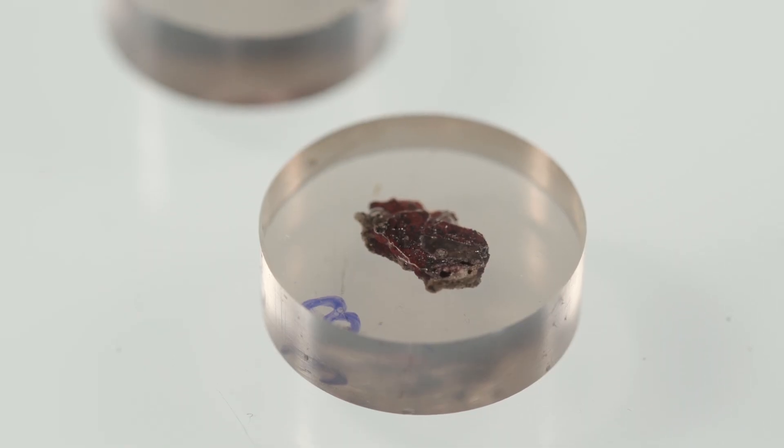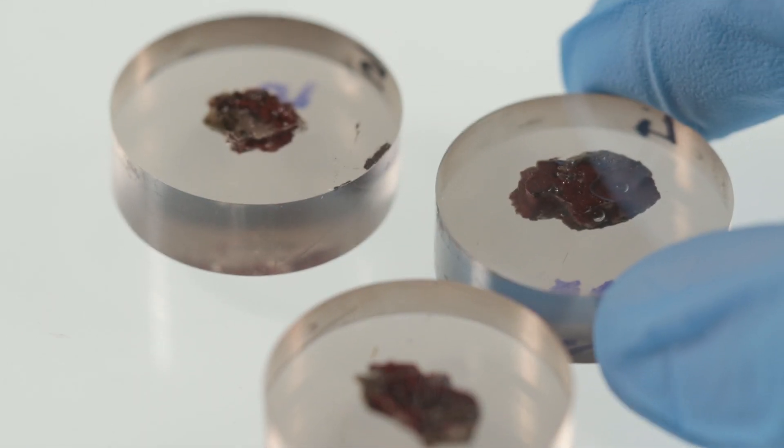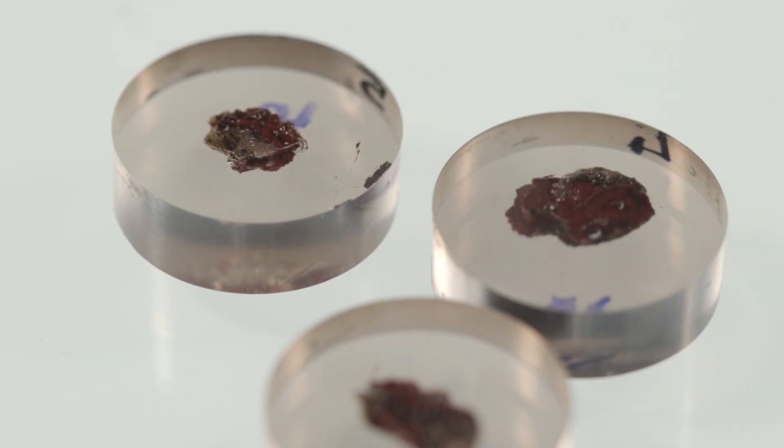We studied several trinitite samples. Trinitite is a glassy material containing several metallic droplets. Well, in one of these metallic droplets, we found a new quasicrystal, a new composition quasicrystal,